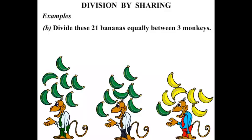1, 2, 3, 4, 5, 6, 7. Right, 7 bananas for the third monkey as well. So each monkey gets 7 bananas.